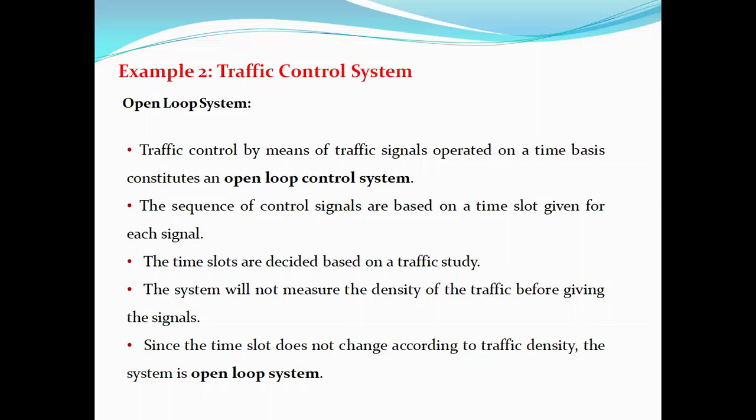The second example is a traffic control system. Traffic control by means of traffic signals operated on a time basis constitutes an open loop control system. The sequence of control signals is based on a time slot given for each signal. The time slots are decided based on a traffic study. The system will not measure the density of traffic before giving the signal, and since the time slot does not change according to traffic density, the system is an open loop system.